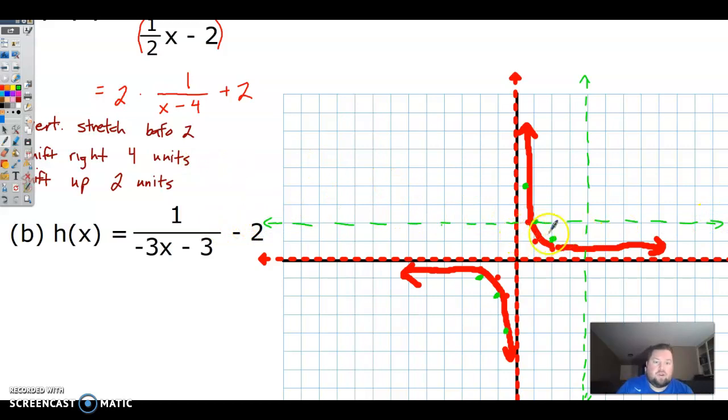Then we're gonna move our points along with that. So right four, one, two, three, four, and up two, right there. And then this one's here, and this one is up here. And then same thing here. Right one, two, three, four, up two. Right there. One, two, three, four, one, two. And one, two, three, four, one, two. Right there.